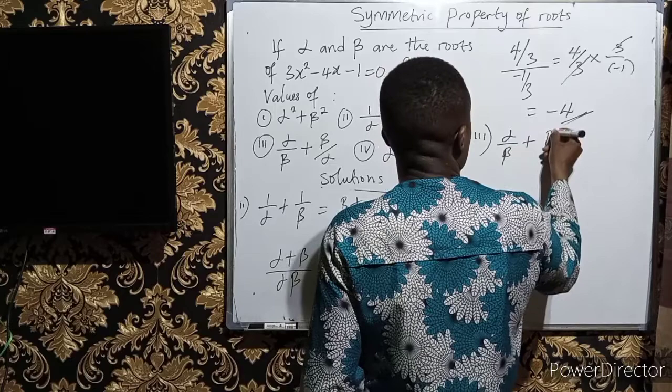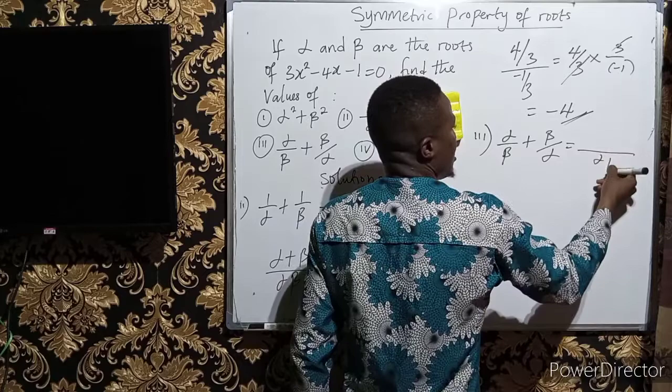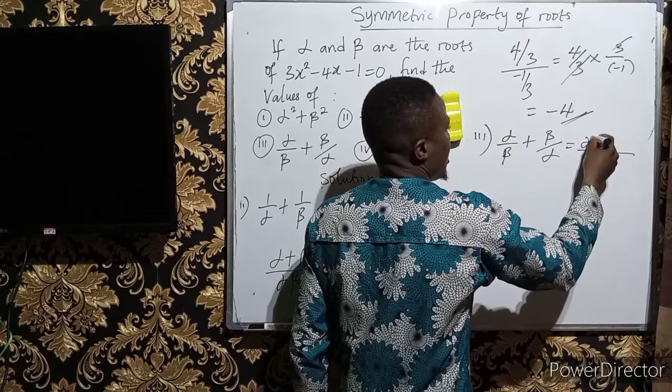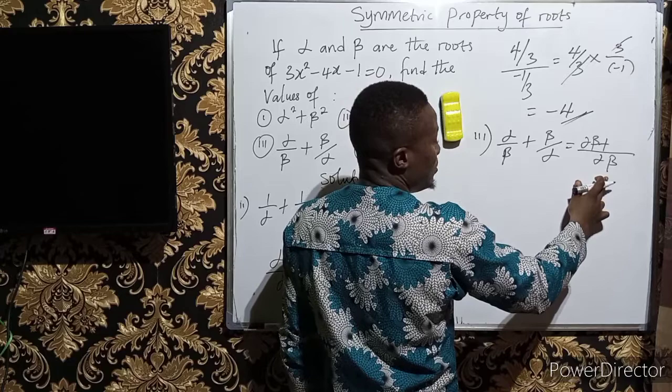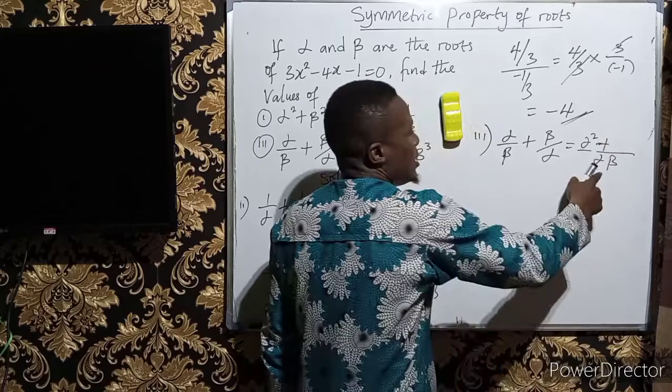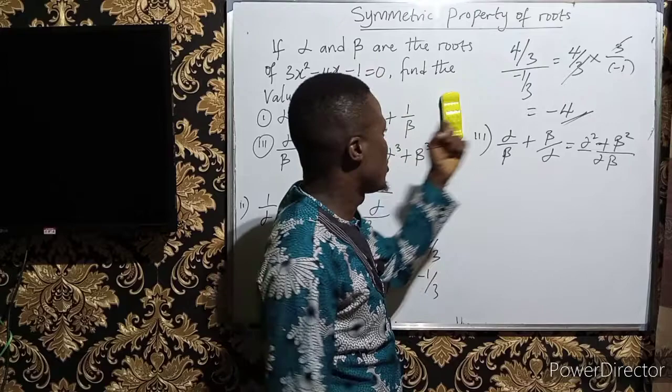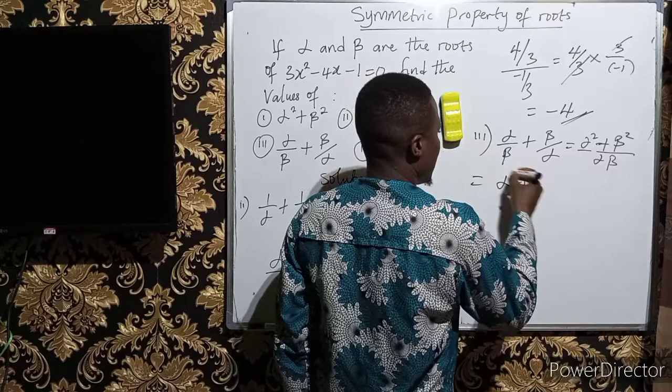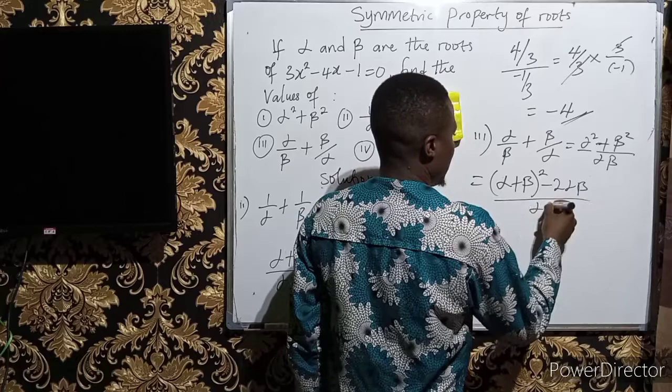For the third expression, alpha over beta plus beta over alpha: taking the LCM which is alpha beta, we get alpha squared plus beta squared all over alpha beta. As established in the first example, alpha squared plus beta squared equals alpha plus beta all squared minus 2 alpha beta, so the full expression becomes alpha plus beta all squared minus 2 alpha beta, all over alpha beta.